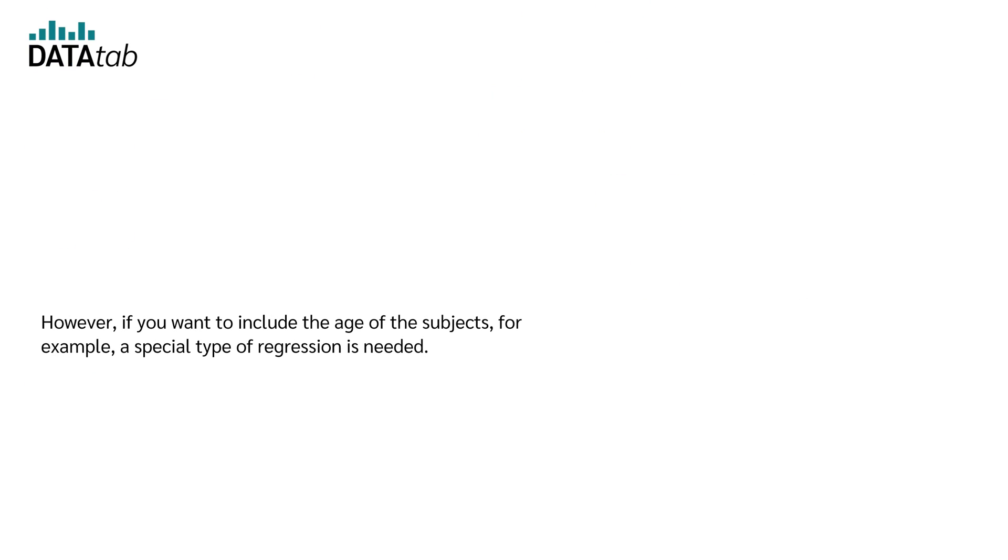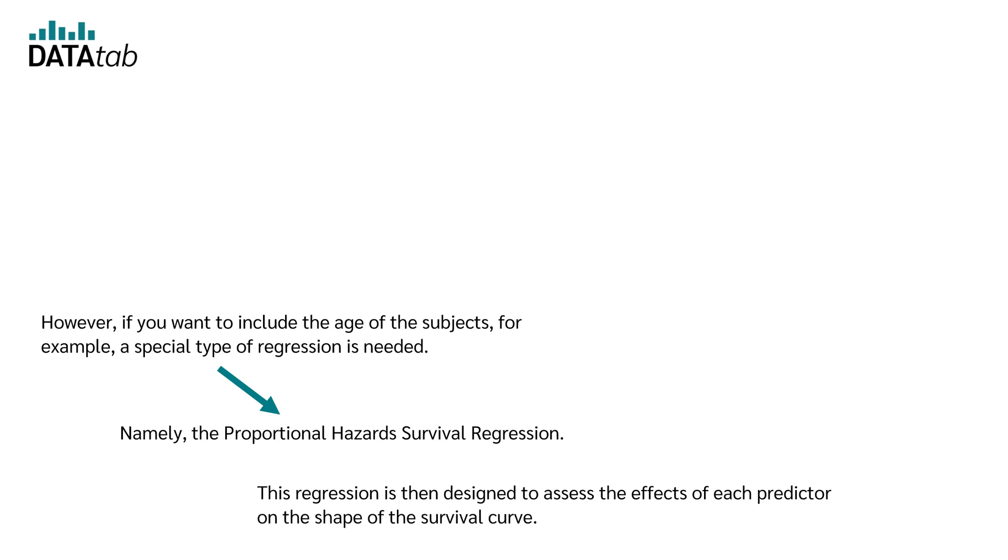However, if you want to include the age of the subjects, for example, a special type of regression is needed, namely the proportional hazard survival regression. The regression should then evaluate the effects of the individual predictors on the shape of the survival curve.